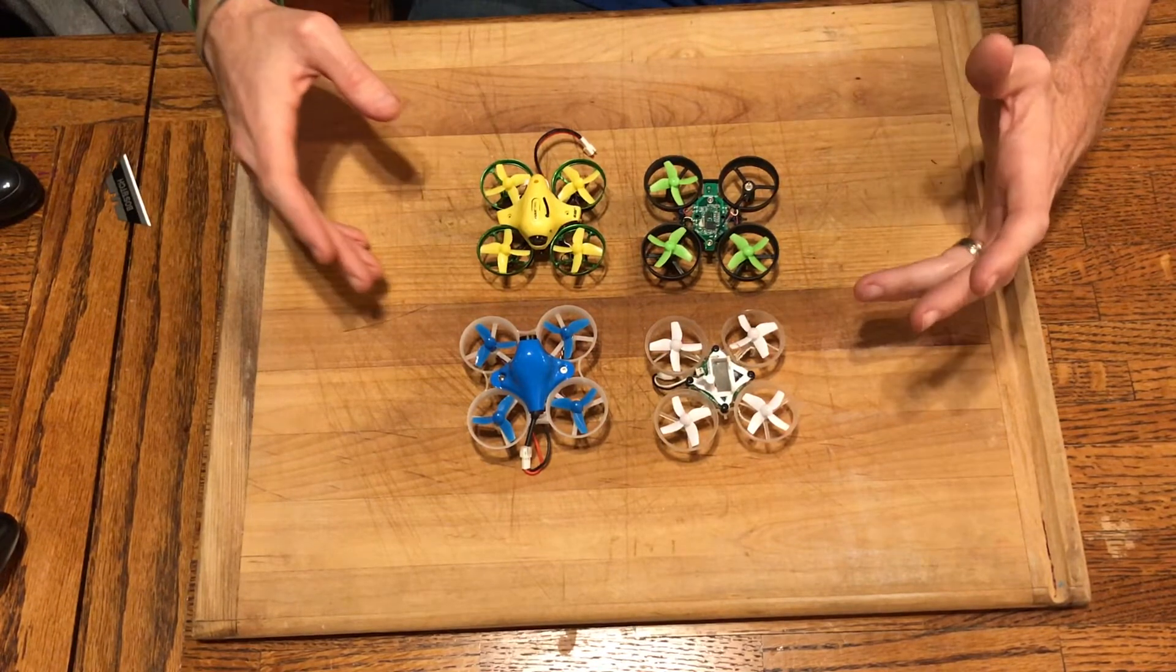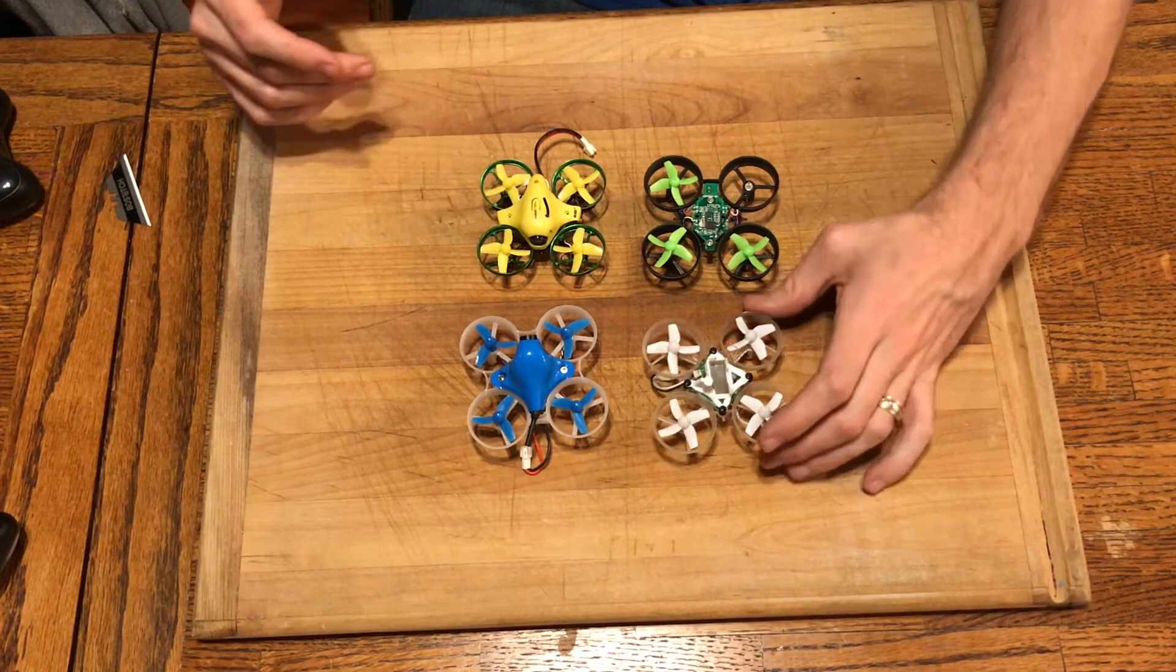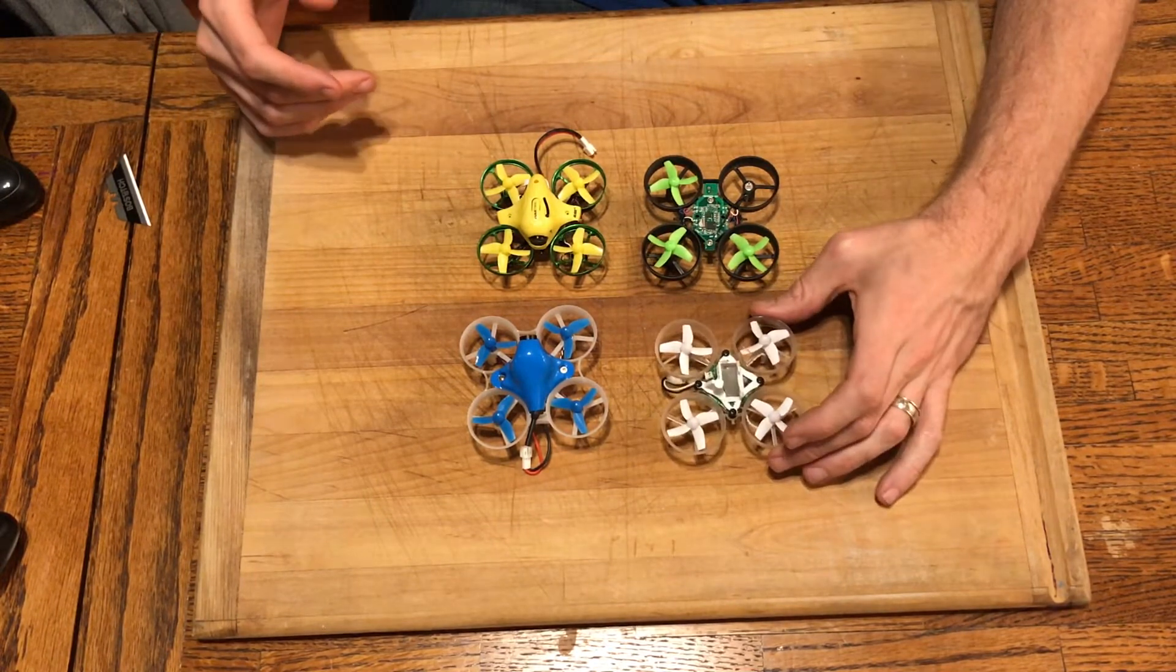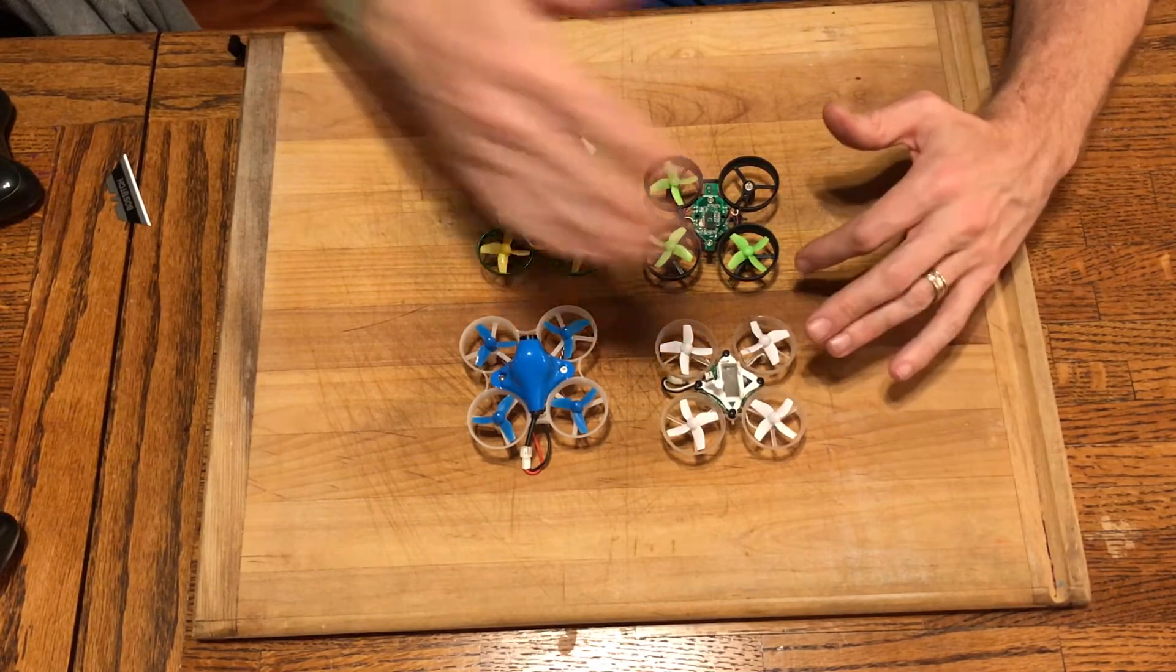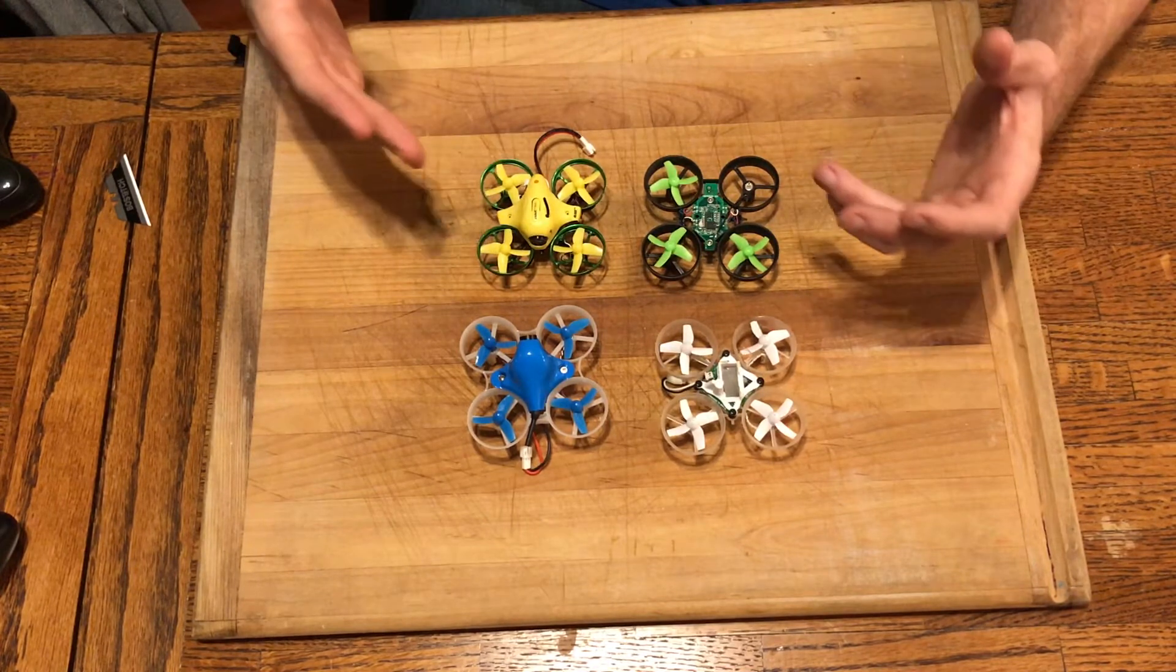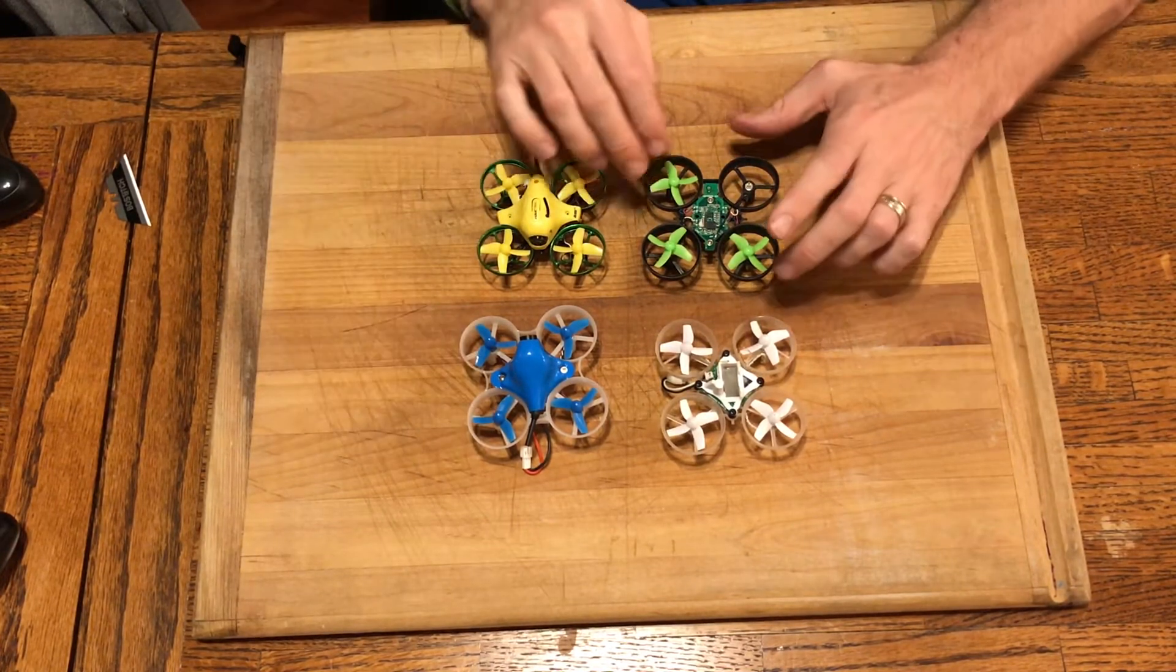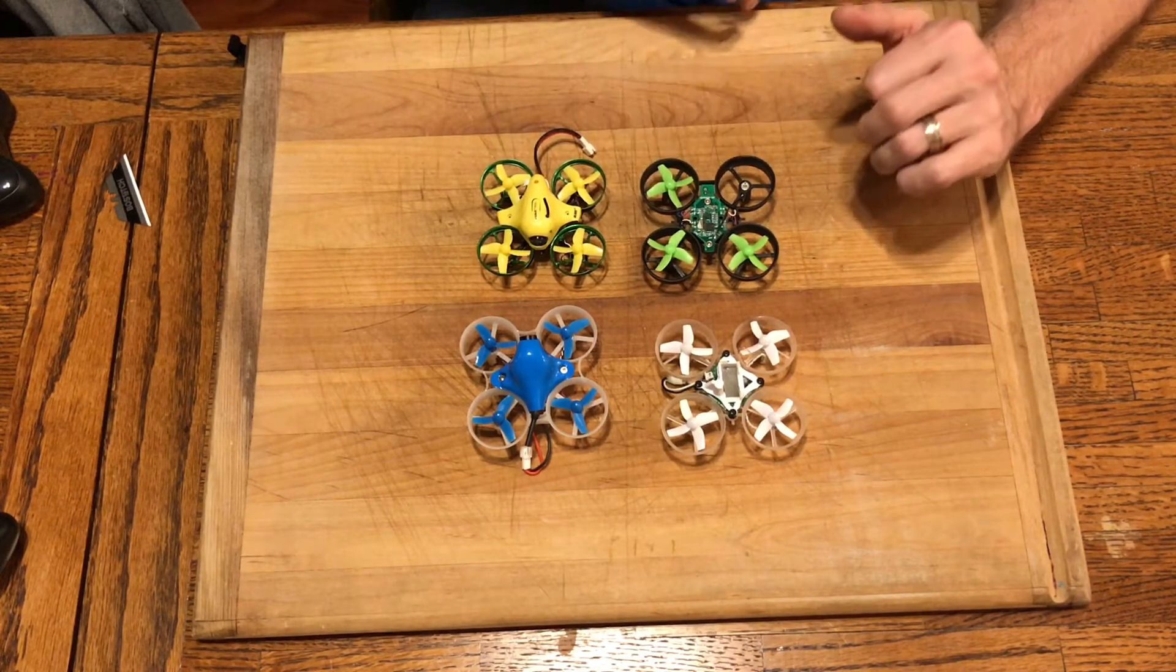So the first thing you're going to have to start with is one of these quadcopters. And I have some examples here. This here is a kind of first generation blade Inductrix that was turned into a tiny whoop. And then it was replaced by this guy. I still fly this one. This is the Inductrix FPV with some mods on it. This is a full modded one. And then this is an Eachine E010 I think is what this one's called.